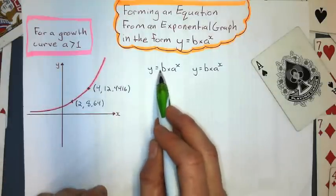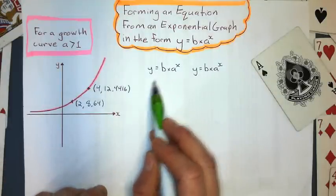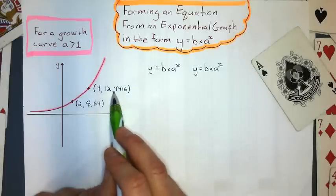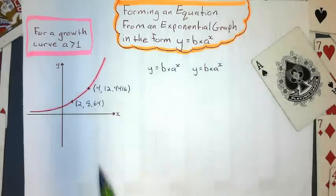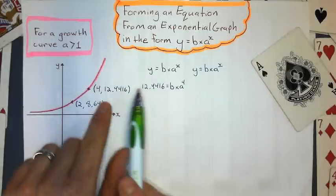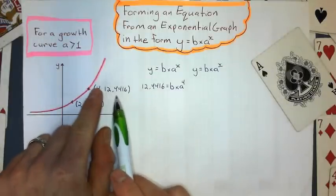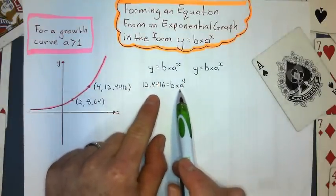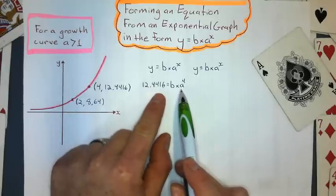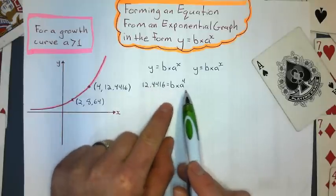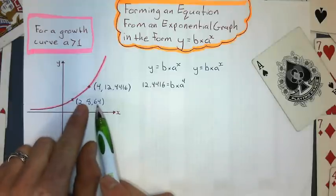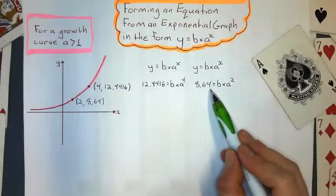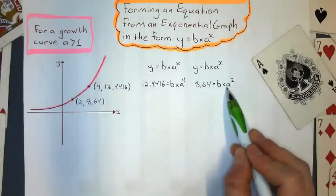So for this equation right here, I'm going to substitute this set of points. And remember, 4 is x and this is y. So for this coordinate, I substitute x and y into x and y here, and I'm left with this. I still need to figure out b and a. And now I'll do the same thing with this set of points here. And I get 8.64 equals b times a squared.